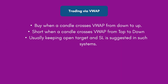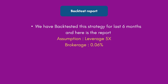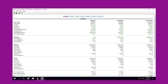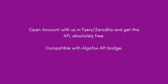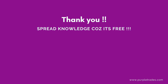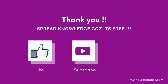The backtest inputs used a 5x leverage and 0.06% brokerage on turnover. The result: ₹1 lakh invested became ₹2,06,007 — a 106% return. If you like this strategy, the AFL is available free of cost if you open an account with Fyers or Zerodha through us. This AFL is also compatible with AlgoFox API bridge for automation. If you've already opened an account with our reference, contact our team. Thank you for watching — do like, subscribe, and share.